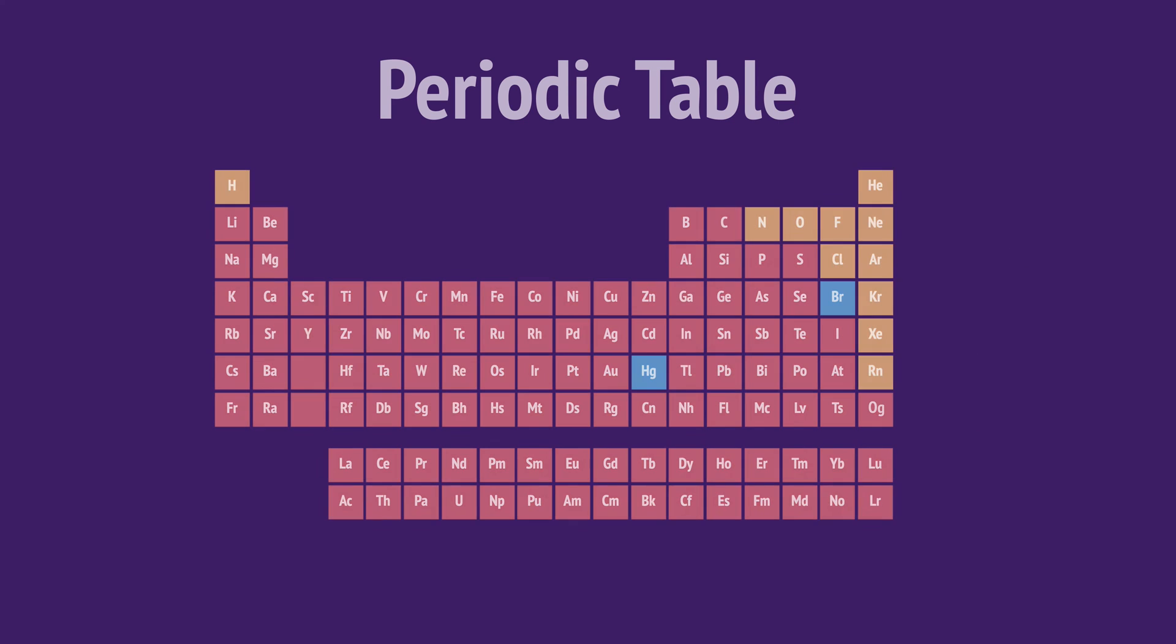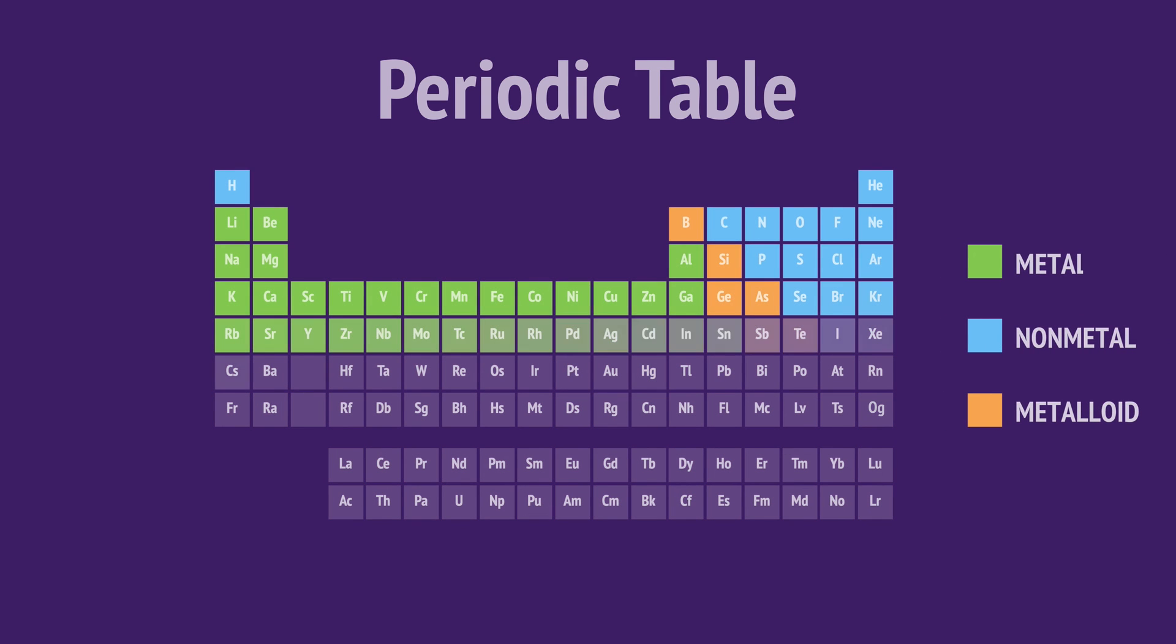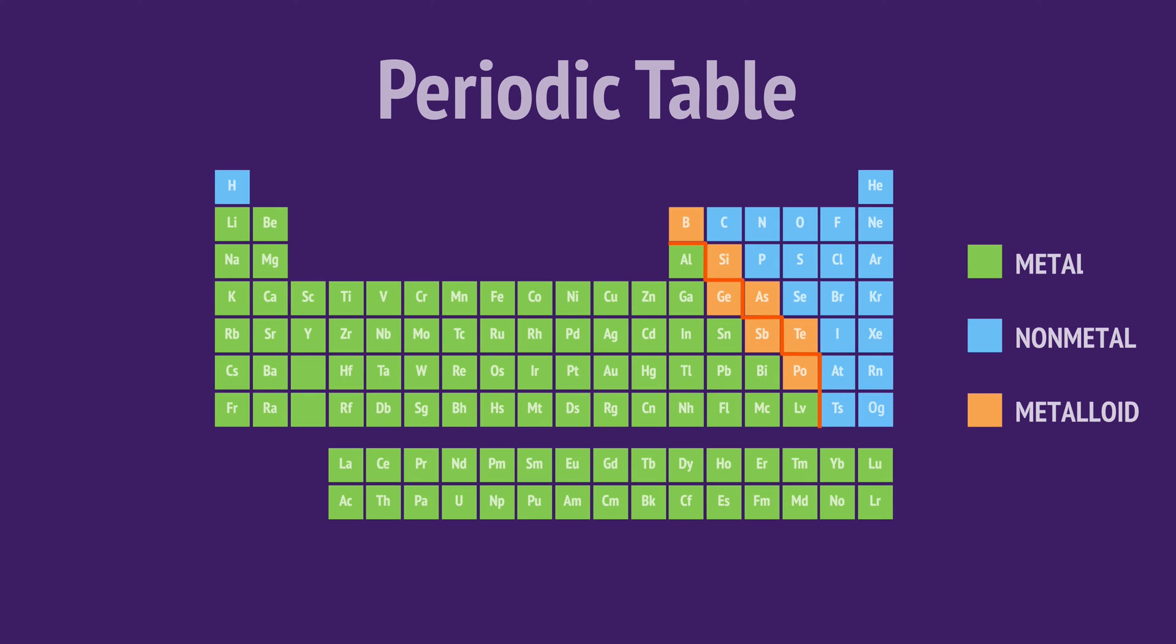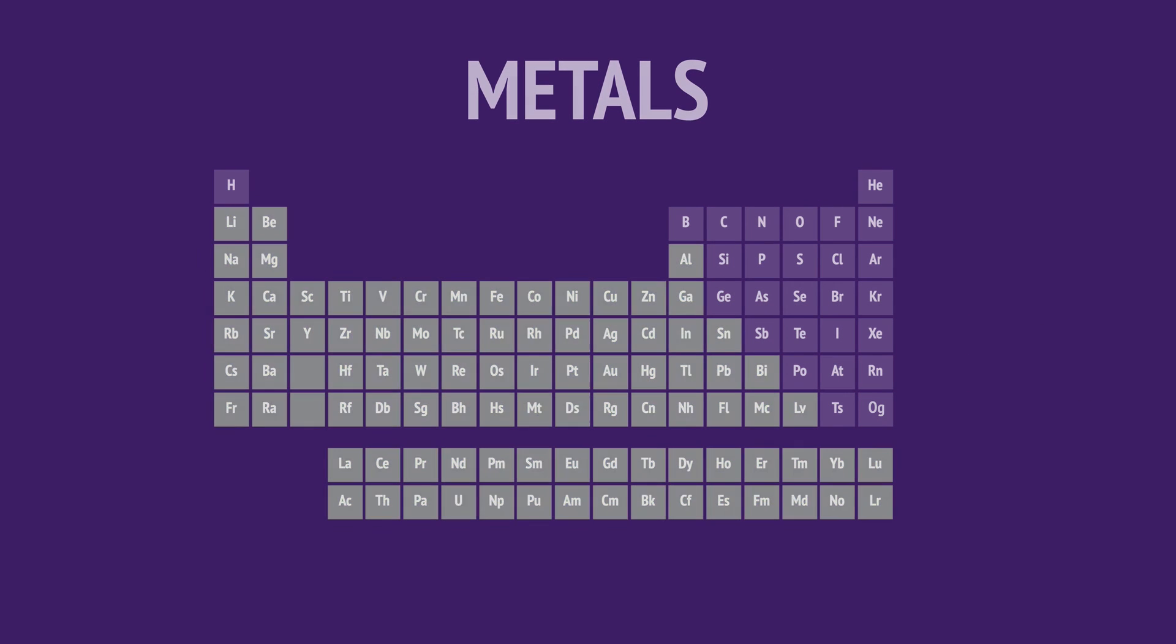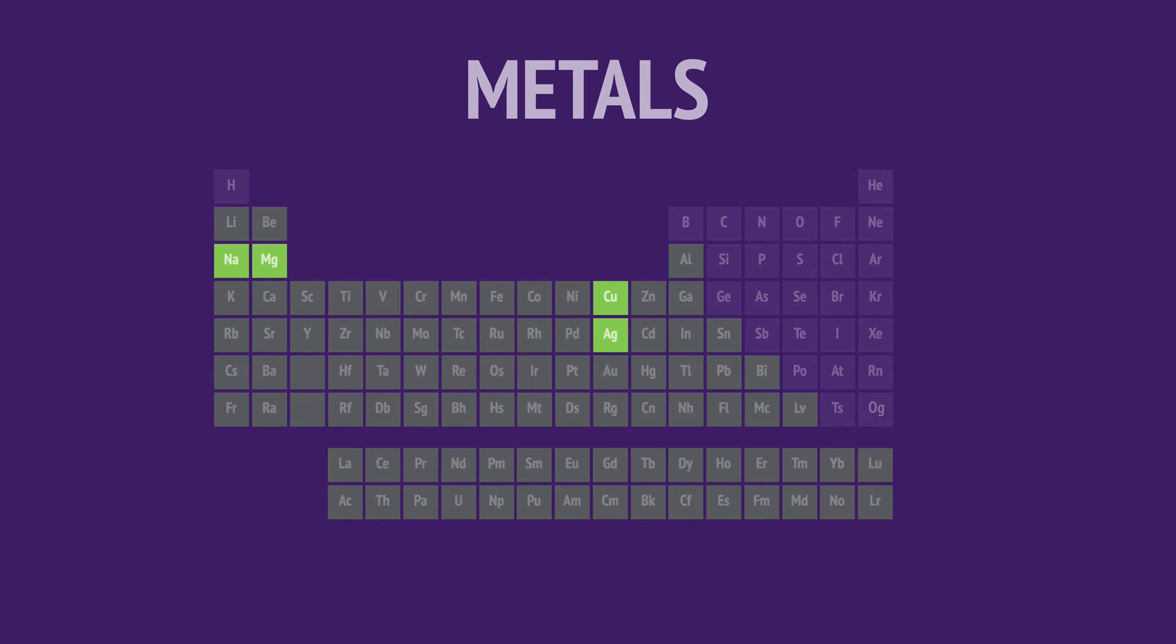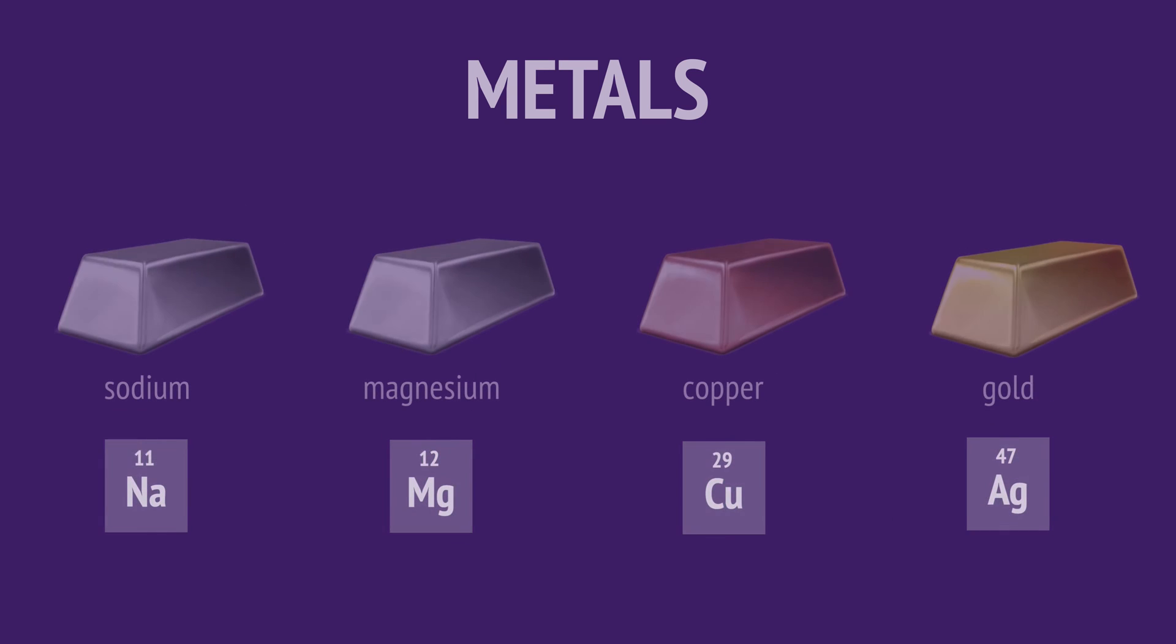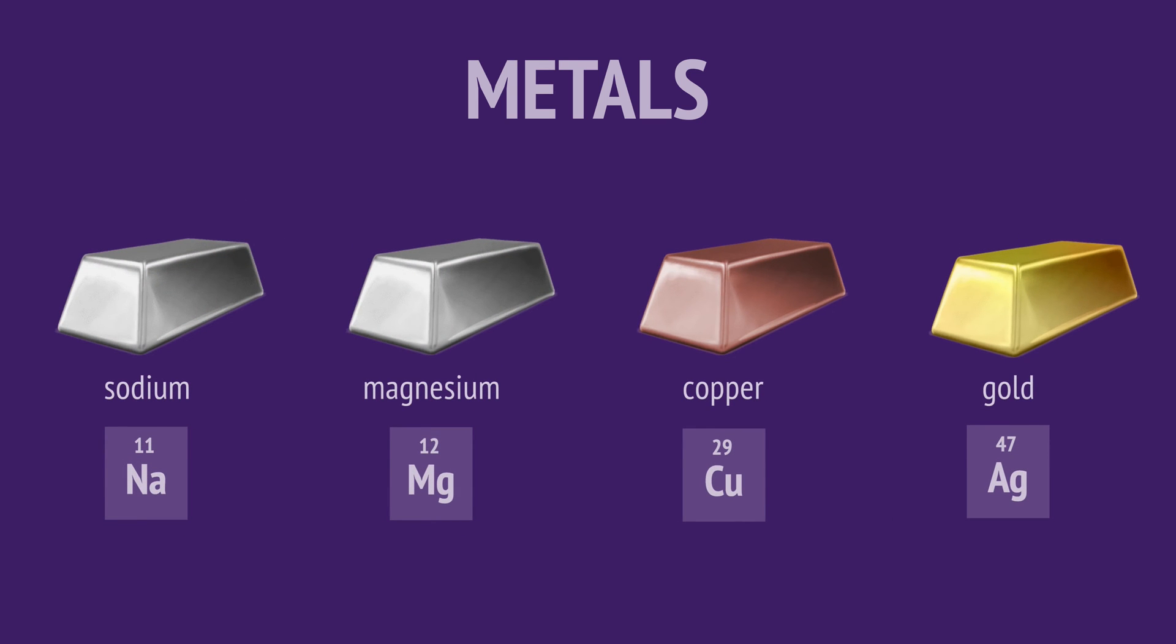But mostly we classify elements as either metals or nonmetals based on their general physical and chemical properties. Metals on the left of the periodic table are mostly shiny solids that are good conductors of heat and electricity.